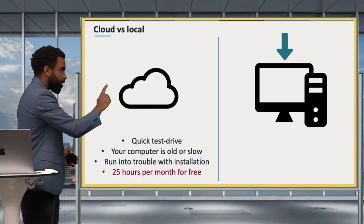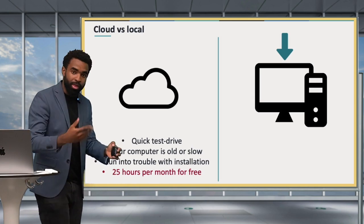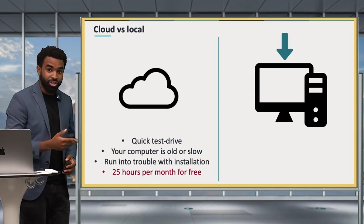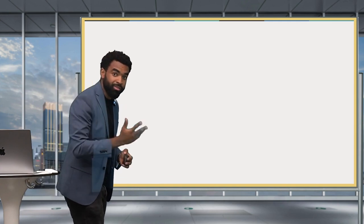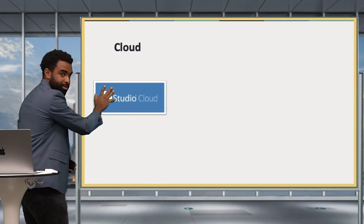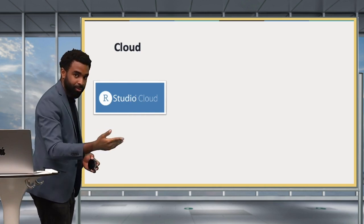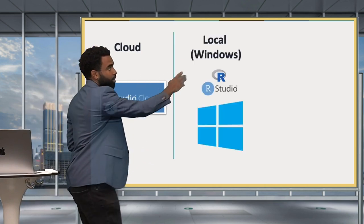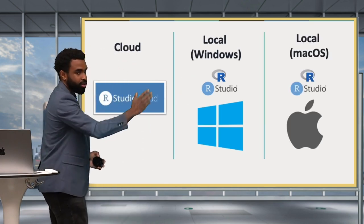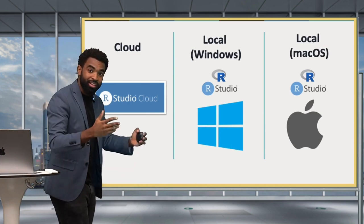Note that RStudio Cloud only gives you 25 free project hours per month; after that you have to pay, so keep that in mind when making this decision. The rest of the video is divided into three parts: first, how to get set up on the cloud with RStudio.cloud; then how to install locally on Windows; and then how to install locally on Mac OS. Jump to the section that's relevant for you.